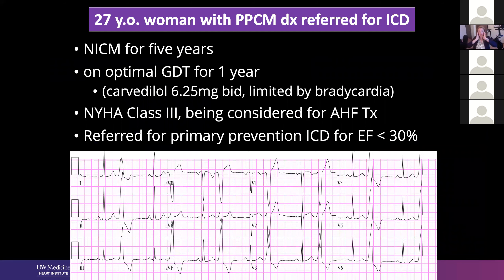We finally got a patient to the lab. So: 27-year-old woman with peripartum cardiomyopathy, diagnosed five years ago. She was referred to me — this was my first job in Chicago — for an ICD. Everyone kept saying she was on optimal medical therapy, but really she was only on carvedilol 6.25 mg, limited by bradycardia. She was actually pretty symptomatic — New York Heart Association class three — and her EF was less than 30%. They were even thinking she was going to need advanced therapies.